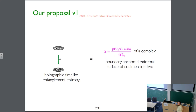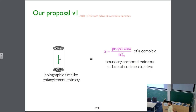Let me start with our proposal. This proposal has several incarnations because we work things up from ground zero. The first version is that holographic timelike entanglement entropy is — Bekenstein-Hawking entropy, pseudo-entropy, or whatever you want to call it — basically a proper area over 4G_N of a complex boundary-anchored extremal surface of codimension 2.